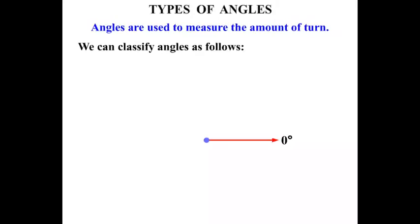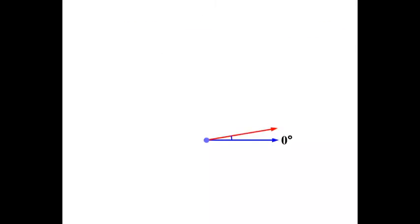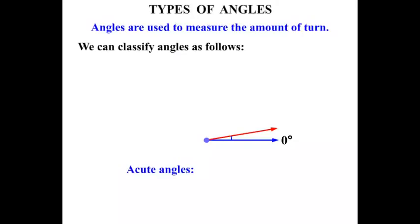Now we're trying to classify the angles. We can classify them as follows. If we start turning that red arm we have created an angle, and that angle is an acute angle. Acute angles are between zero degrees and 90 degrees. So if we keep turning the red arm all of those angles shown are still acute angles.